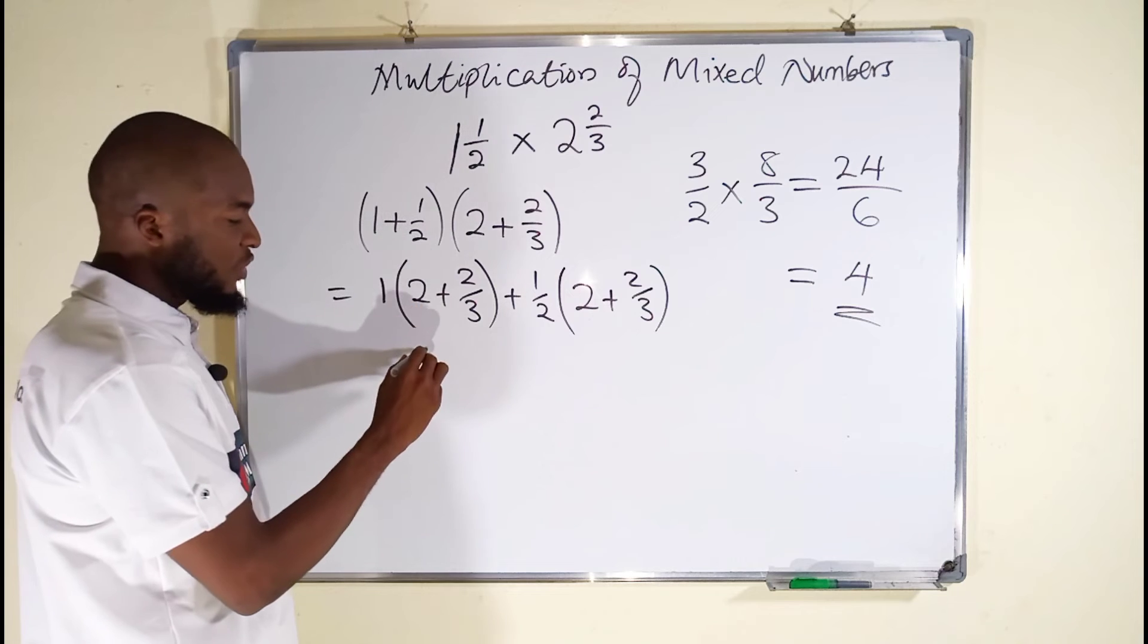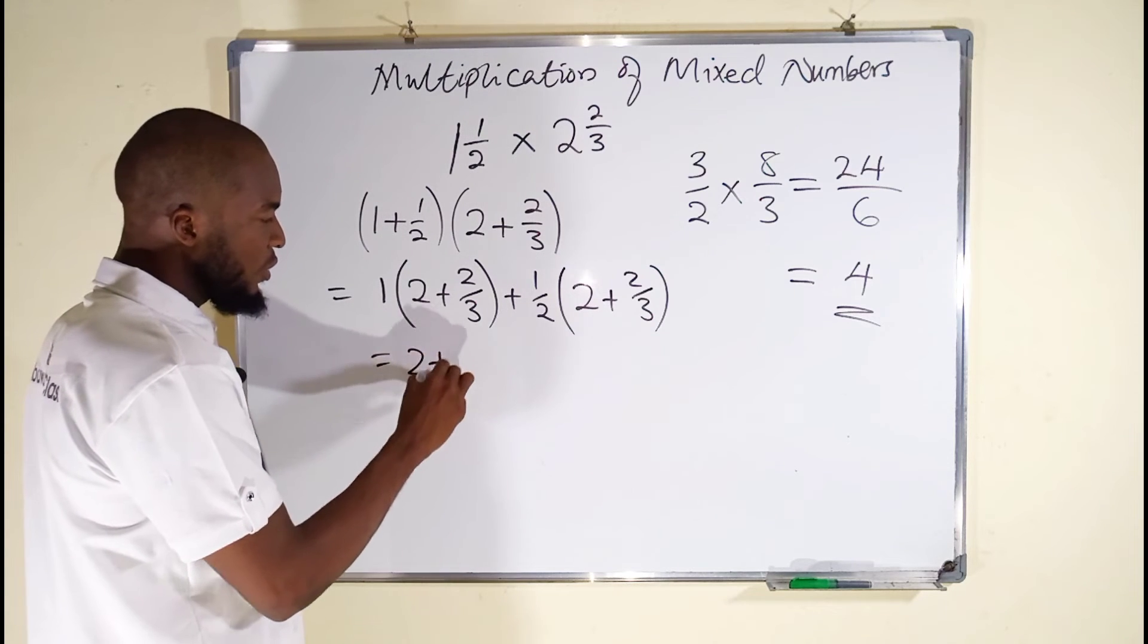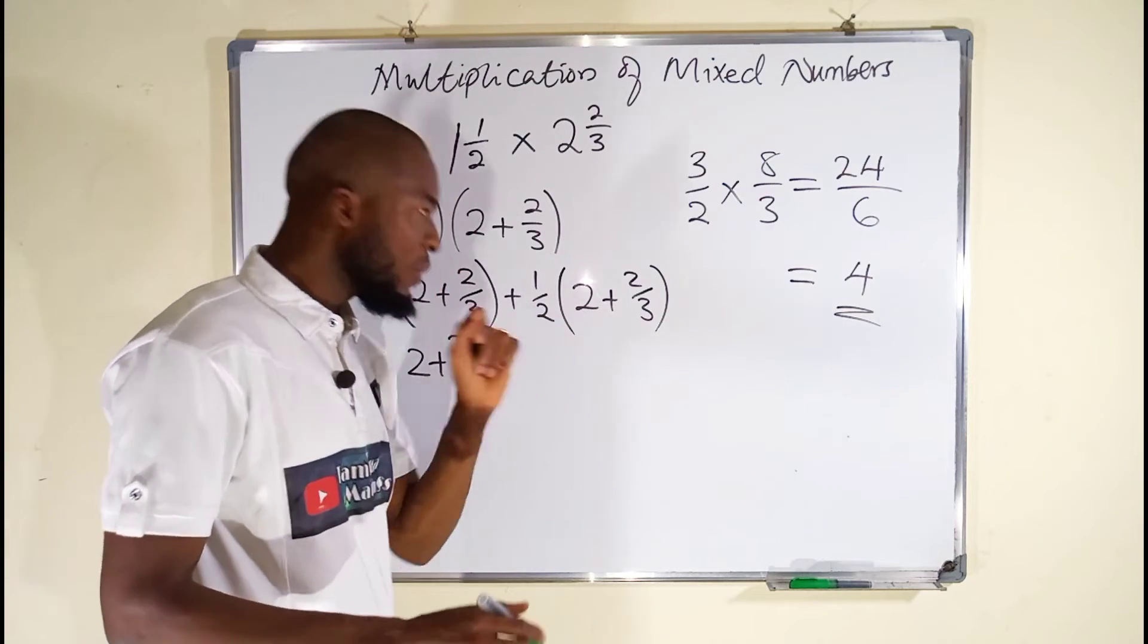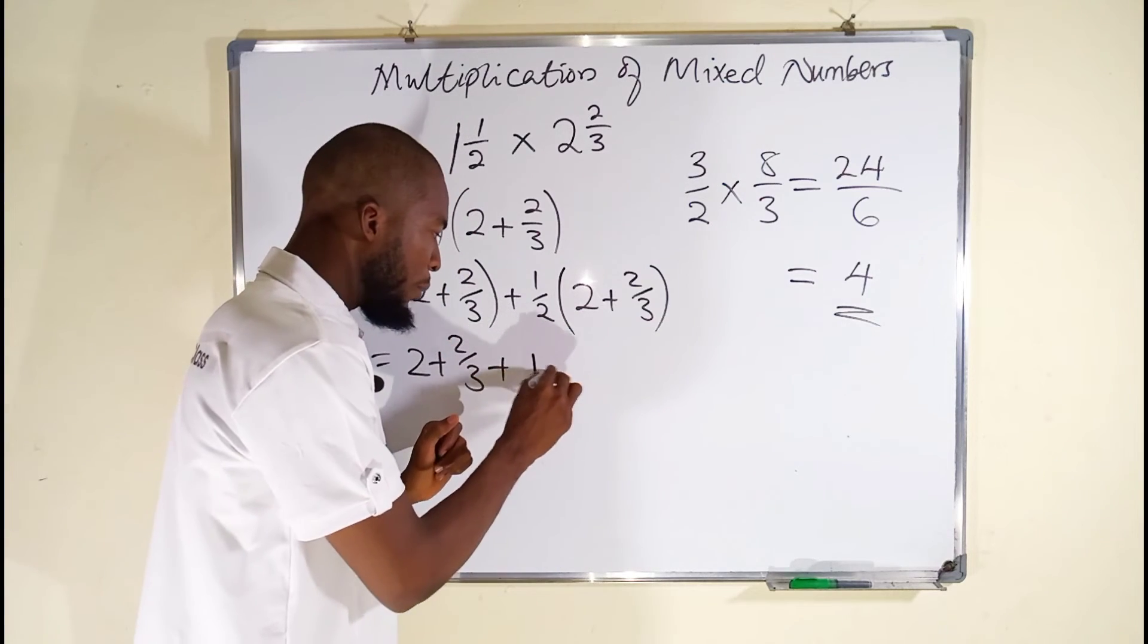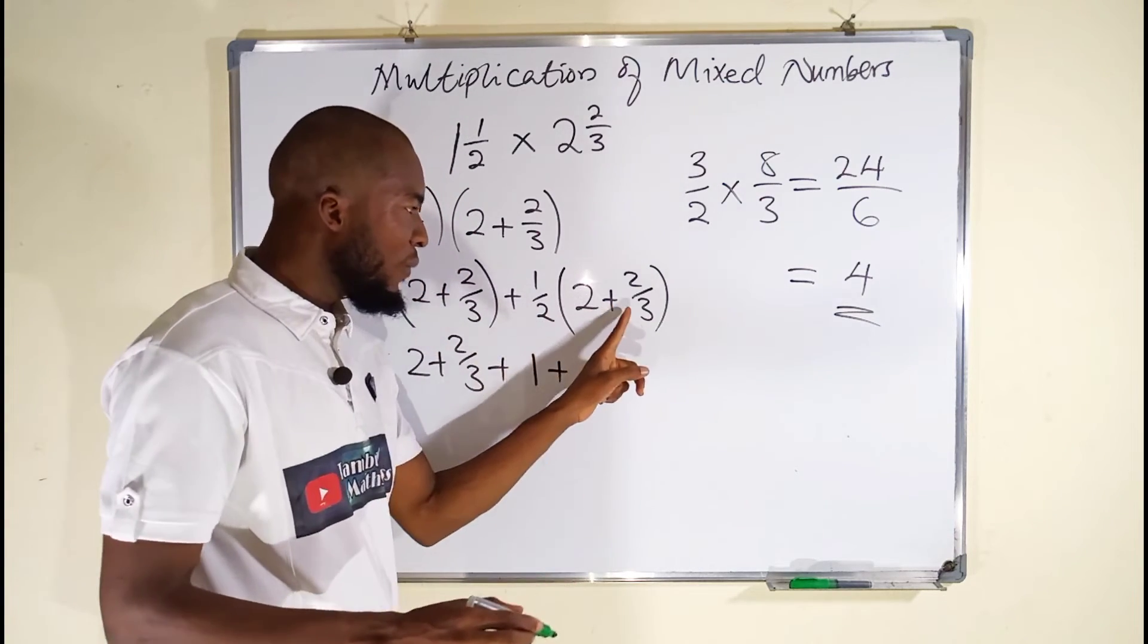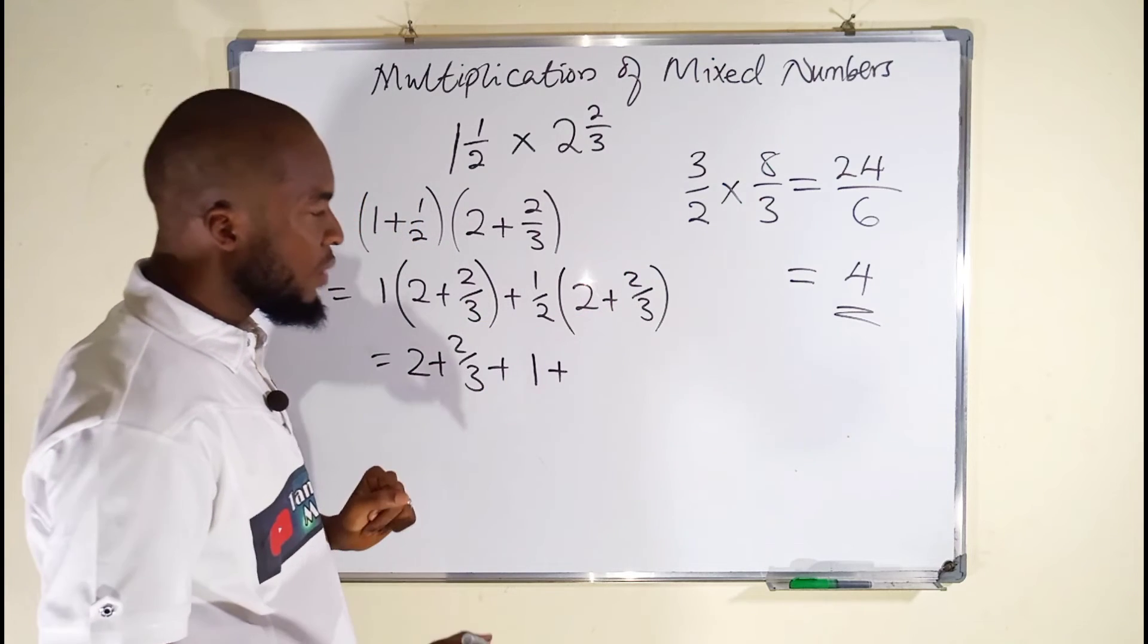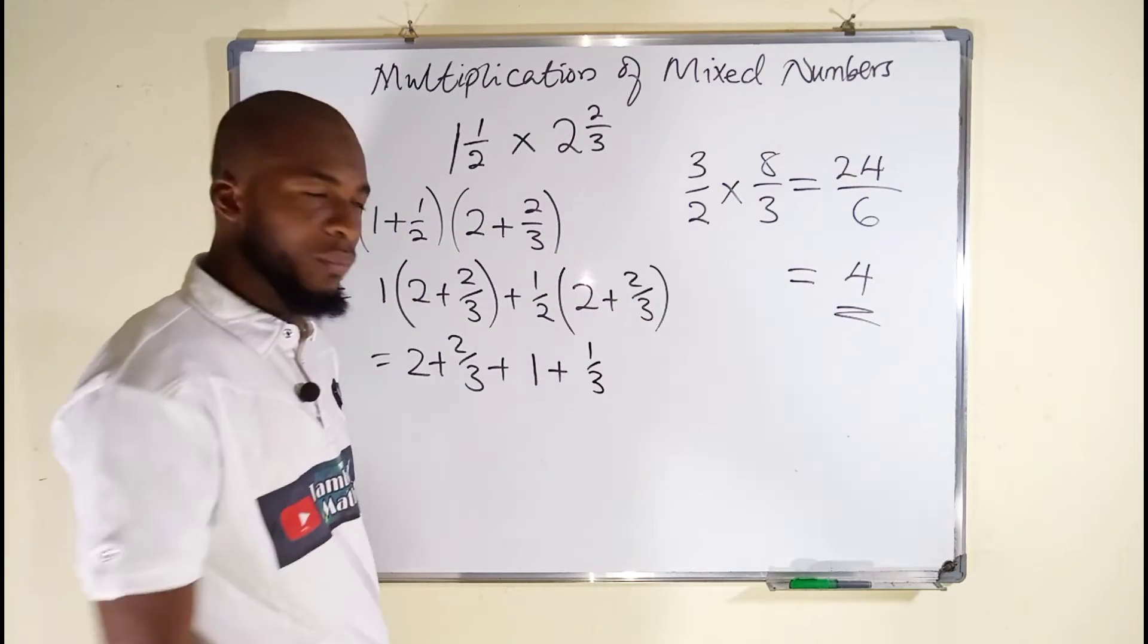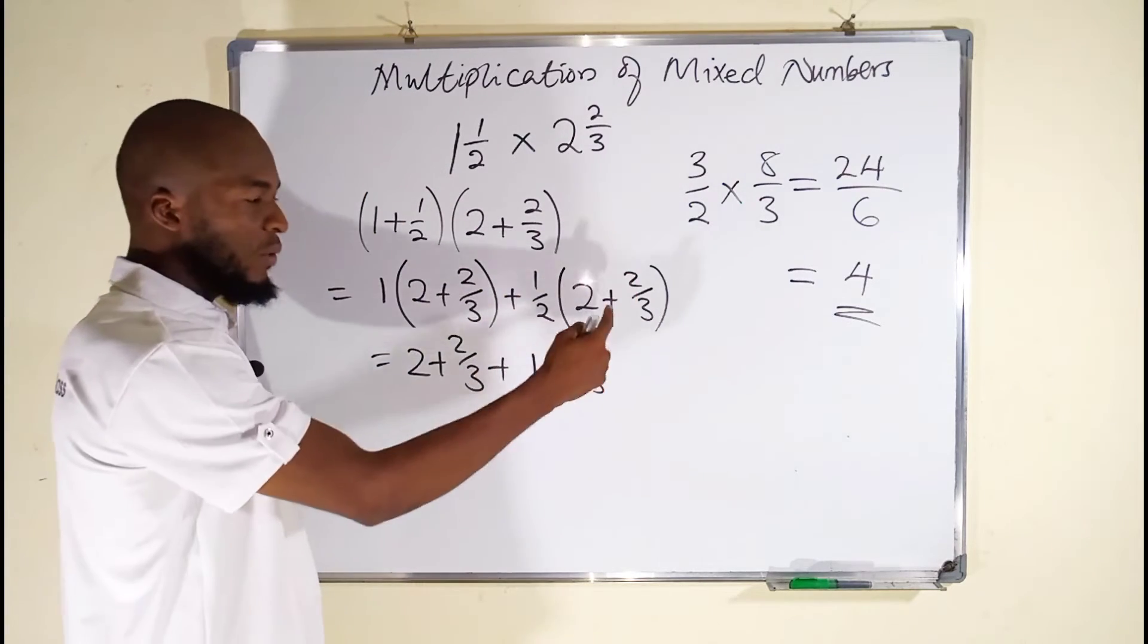Multiplying this by 1 will not change anything. So we have 2 plus 2 over 3, plus half of 2 is 1, plus half of 2 over 3 is just 1 over 3, because 2 will cancel 2 leaving 1.